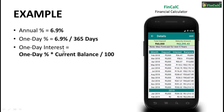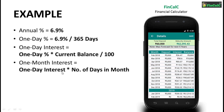Now this interest earned we can multiply by the total number of days in that particular month and we get the interest earned for the entire month. In this way, we get the total interest earned for the month of February as Rs 26.47. Similarly, we calculate the interest earned for the month of March and April as Rs 58.6 and Rs 85.07.